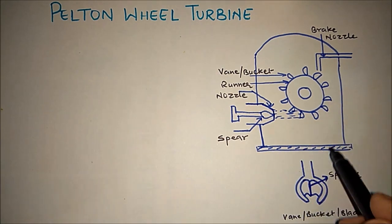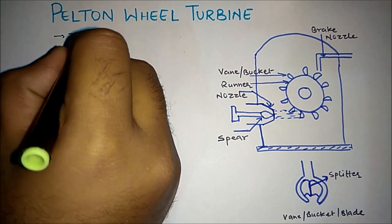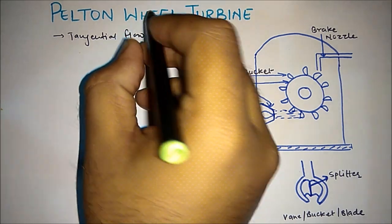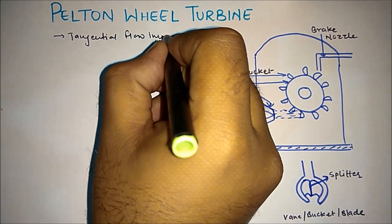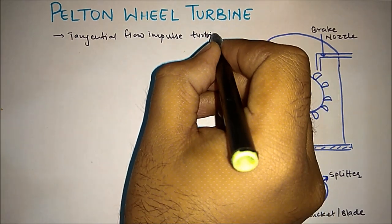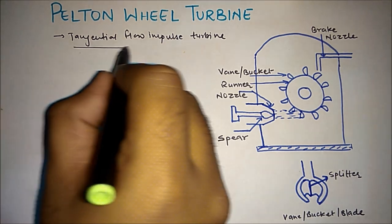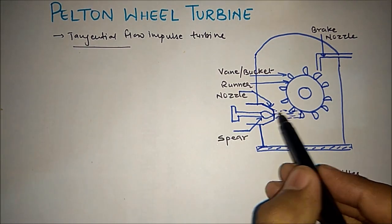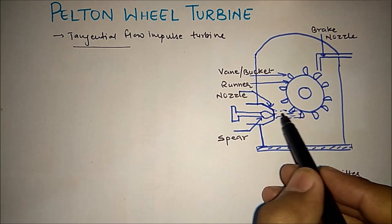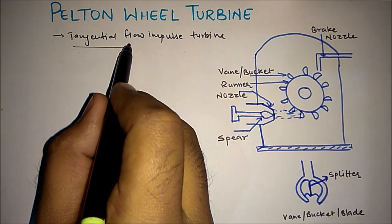This is the figure for Pelton wheel turbine. Pelton wheel turbine is a type of tangential flow impulse turbine. Now why we say tangential flow? Because the jet of water is striking the runner tangentially. This is the tangential flow turbine.